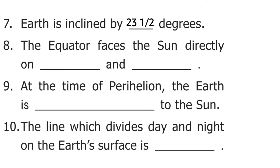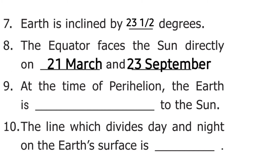The eighth question is: equator faces the sun directly on dash and dash. The answer is 21st March and 23rd September. The ninth question is: at the time of perihelion, the Earth is dashed to the sun. The answer is closest.